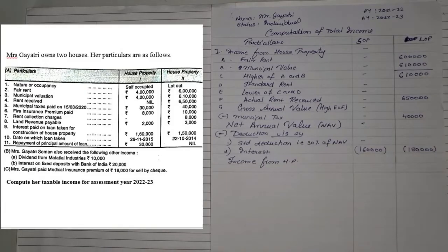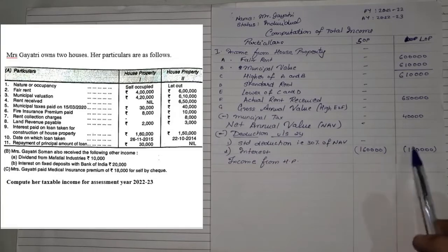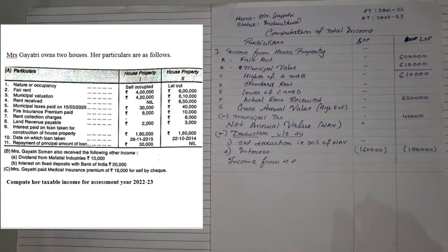Remember, under SOP, if the loan interest is before 1999, only 30,000 deduction you can get. If it is after that, you will get a 2 lakh deduction. So there's 2 lakhs on either side — you will get a deduction of interest on loan for the house property. So now this is it; there's nothing else that has been given.